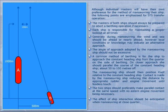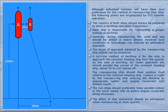When carrying out ship-to-ship operations, advice for maneuvering alongside must be presented, and individual masters will have their own preferences. The following points are emphasized: the master of both ships should always be prepared to abort a berthing operation if necessary; each ship is responsible for maintaining a proper lookout at all times. Generally during maneuvering, the sea should be ahead or nearly ahead, however local conditions may indicate an alternative approach.